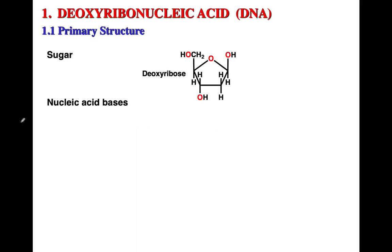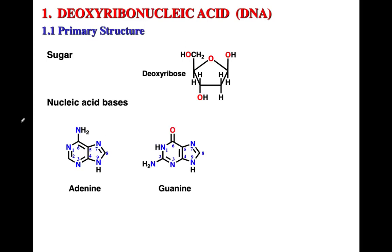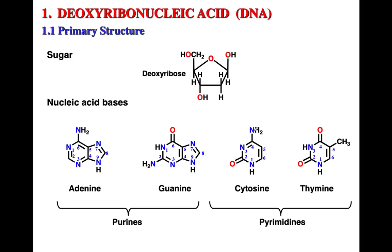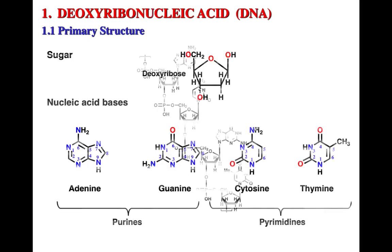The sugar in DNA is deoxyribose, and there are four nucleic acid bases in DNA: adenine, guanine, cytosine, and thymine. The ring numbering is included here as well. Adenine and guanine are the purines, and cytosine and thymine are the pyrimidines.